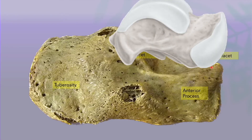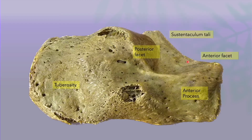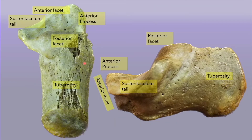This part of the calcaneum is the anterior process, just anterior to this angulation. This whole area is the sinus tarsi, which is the non-articular space between the talus and calcaneum. And here originates the extensor digitorum brevis. This area is also important to visualize the posterior facet whenever we are approaching the calcaneum through the sinus tarsi approach.